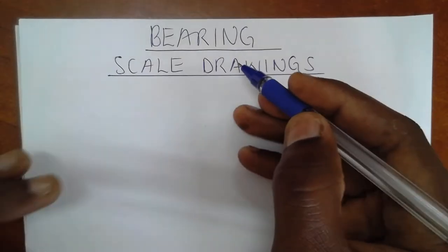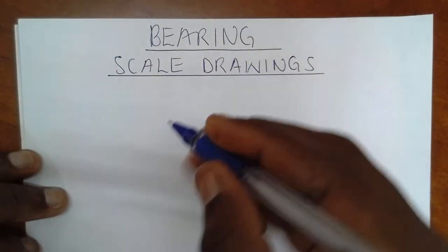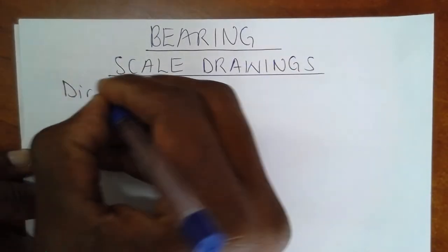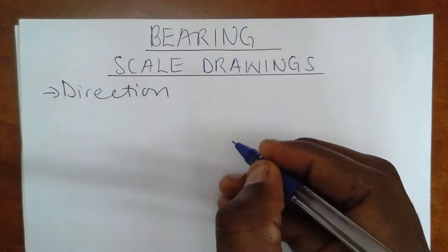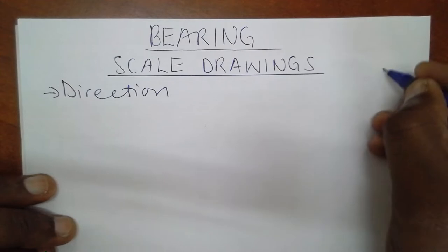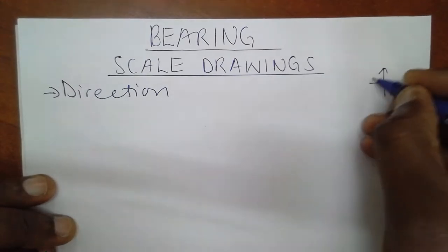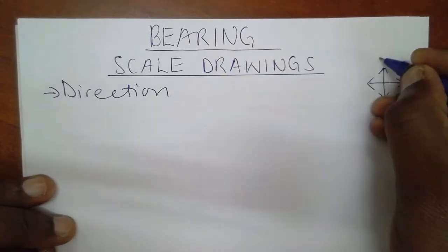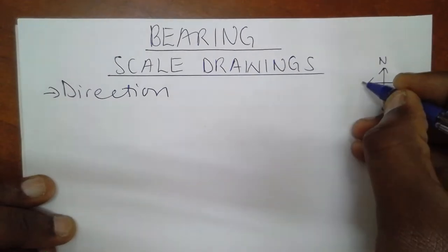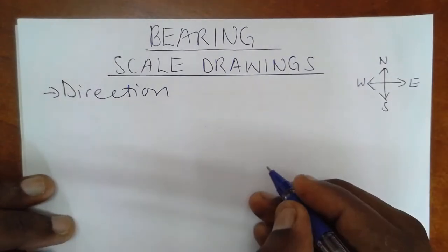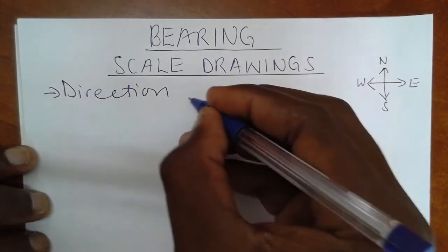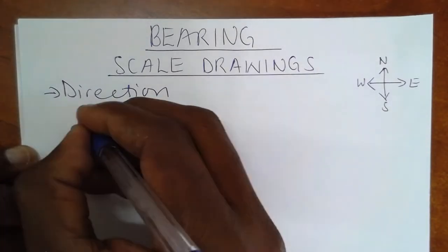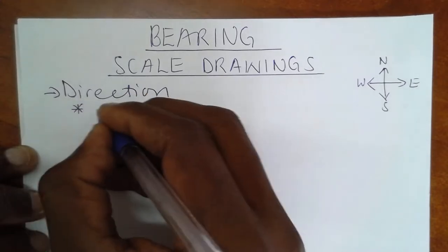That's the first question to ask ourselves. Bearing is simply direction. However, as we are used to bearing to direction using cardinal points, now bearing comes with a different idea. Bearing is a direction that concentrates on the angle.